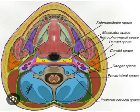Submandibular space. The mylohyoid muscle divides the submandibular space into the superior sublingual compartment and the inferior submaxillary compartment. Tooth apices anterior to the second molar lie superior to the mylohyoid and involve the sublingual compartment when odontogenic infections occur. Second and third molars affect the submaxillary compartment.